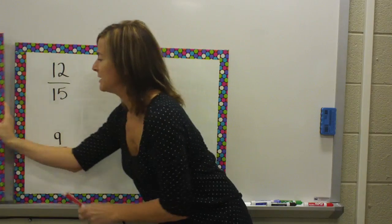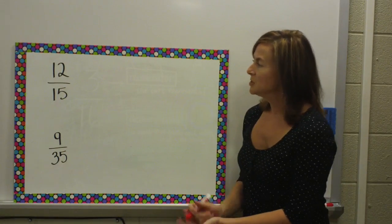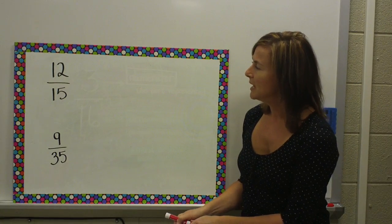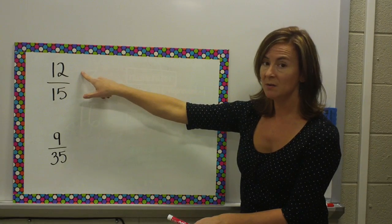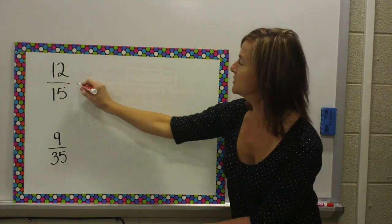Let's try a couple other examples. 12 over 15. 2 won't work, because they're both not even. But, I know 3 times 4 would work for 12. And, I know 3 times 5 for 15.